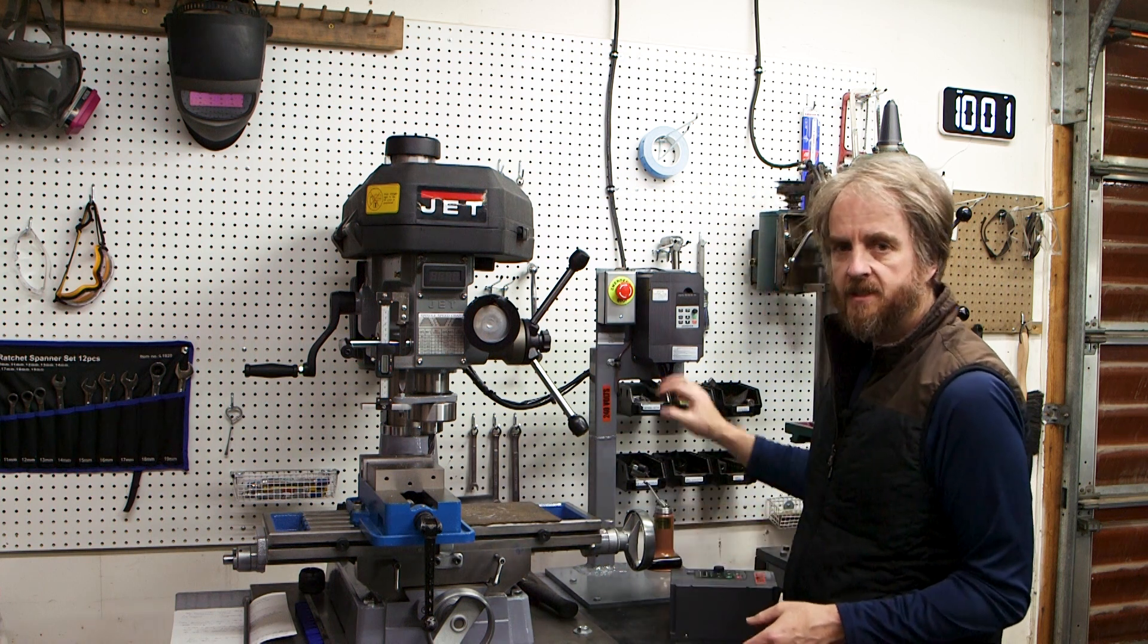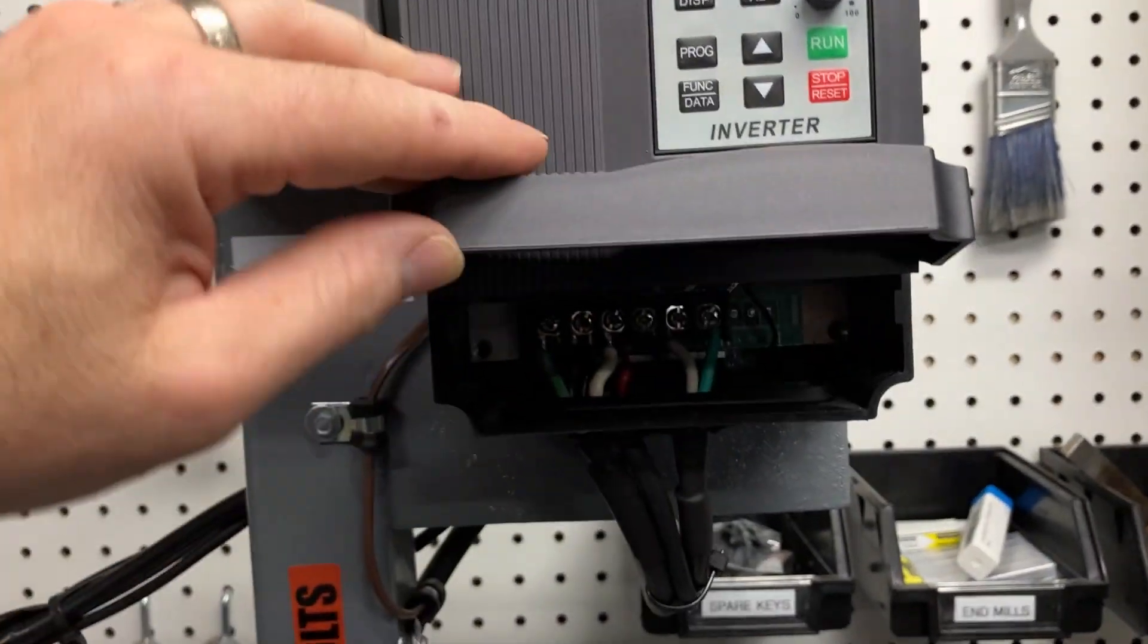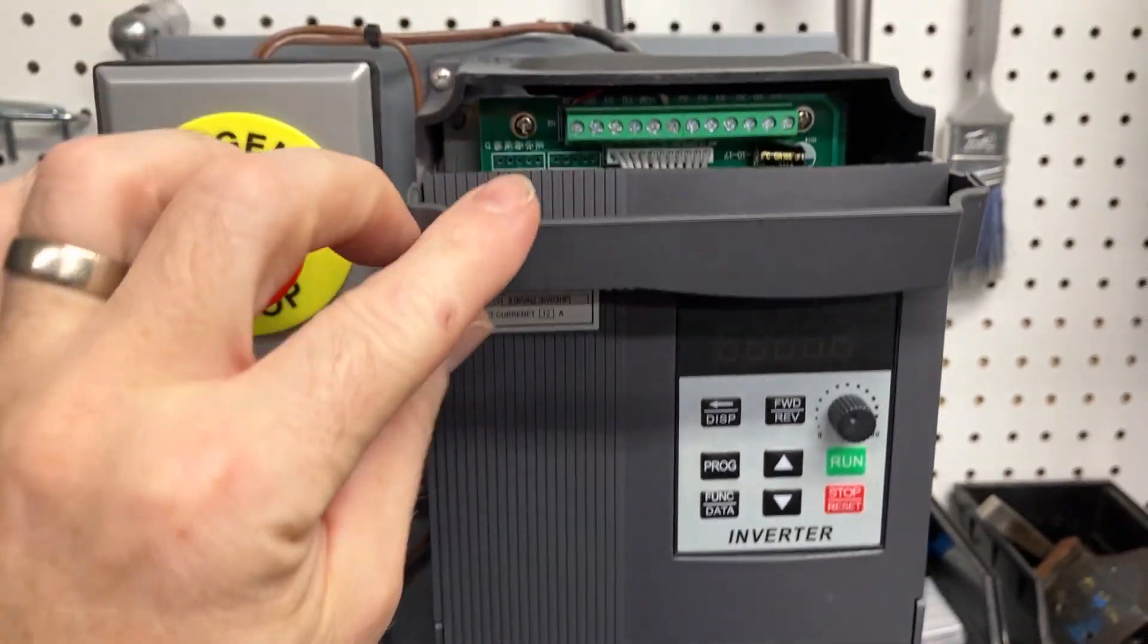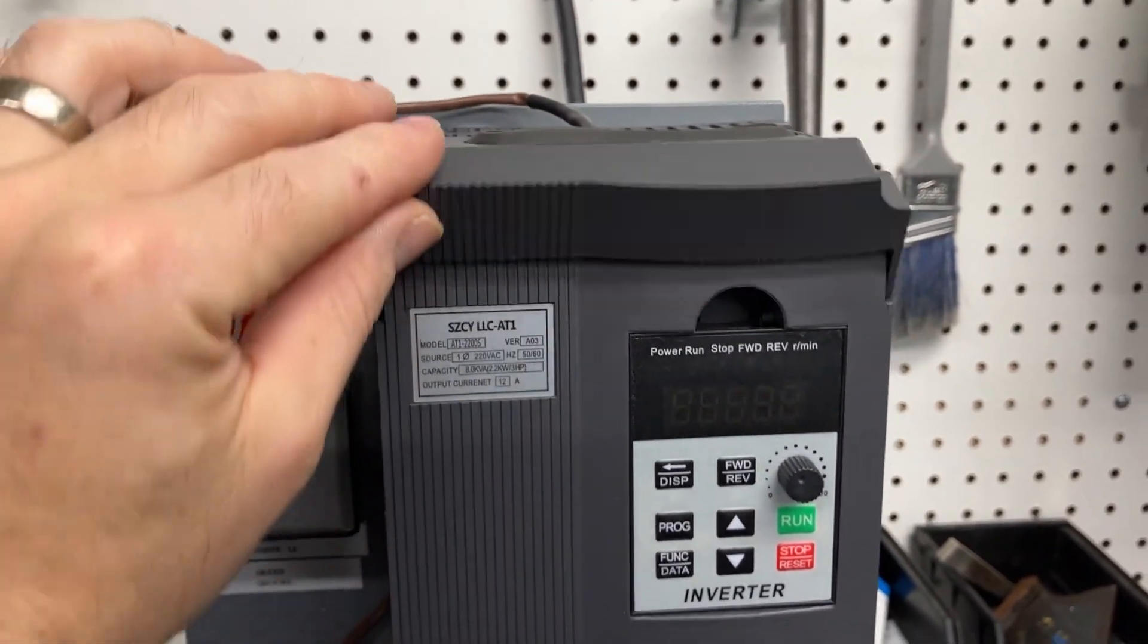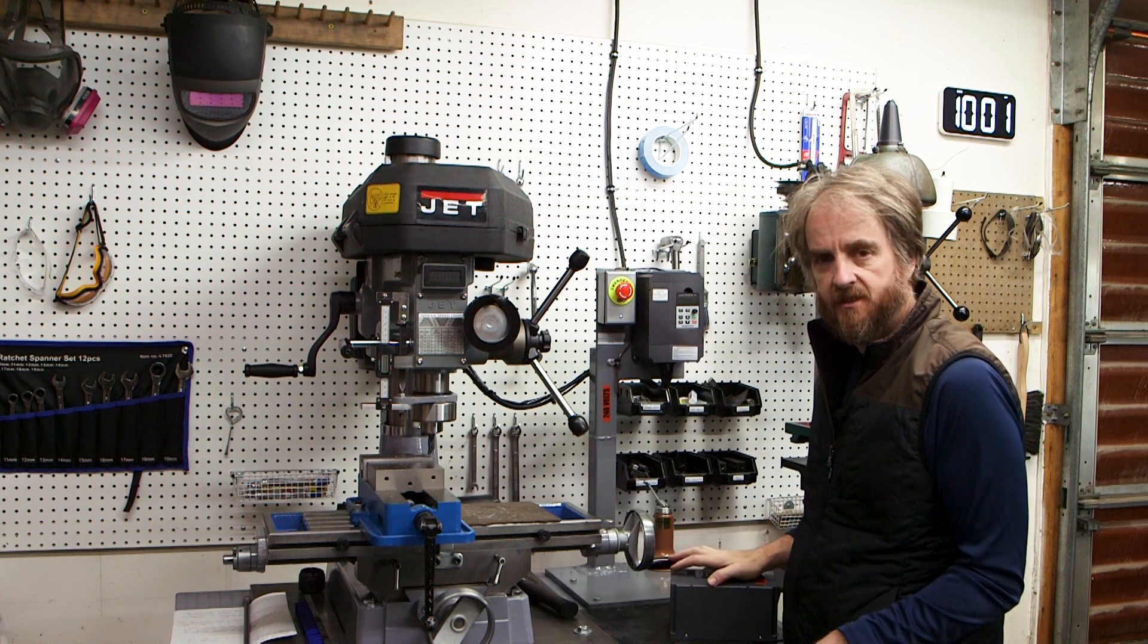So instead, I replaced that with one of these AT1 VFDs. This is the same VFD I've got on my Atlas lathe and I've got on my drill press. It's a really good VFD. It's easy to wire. It's easy to program. From a video perspective, it's wired and programmed exactly the same way as this other VFD.